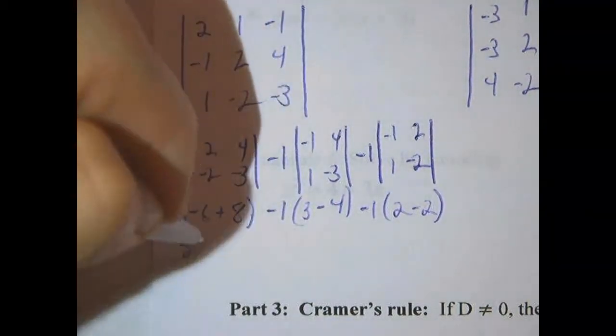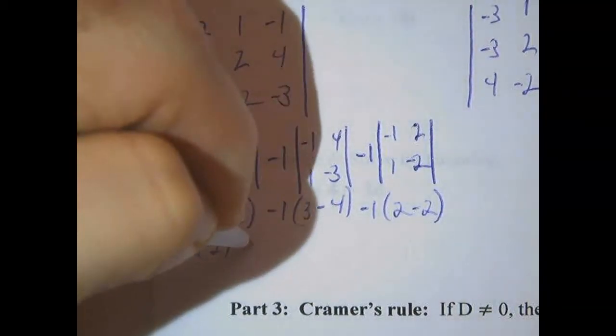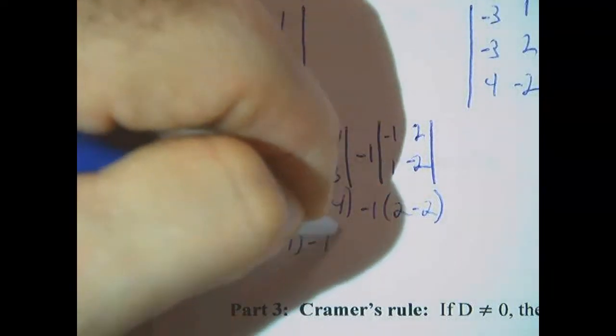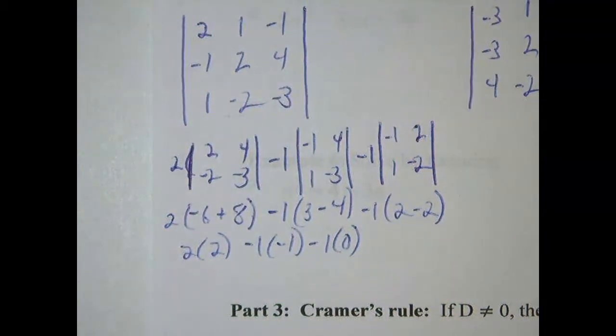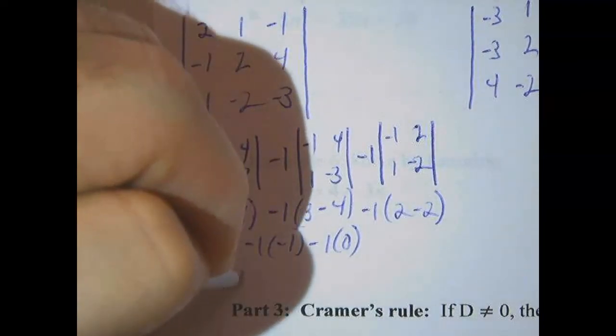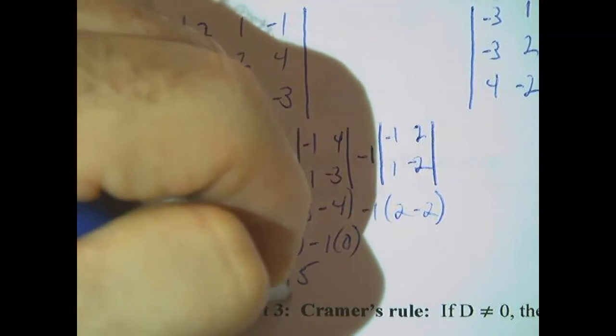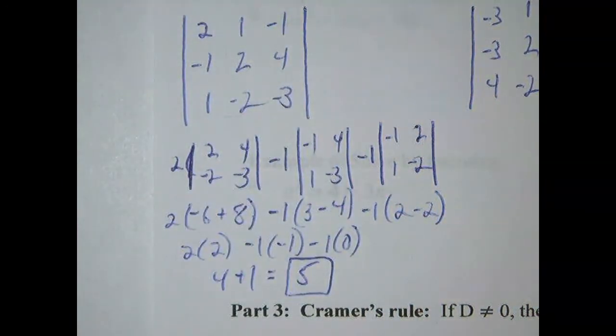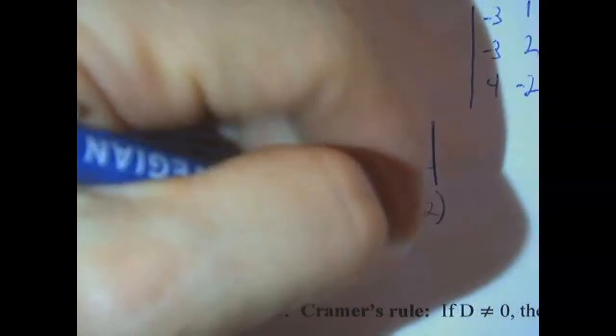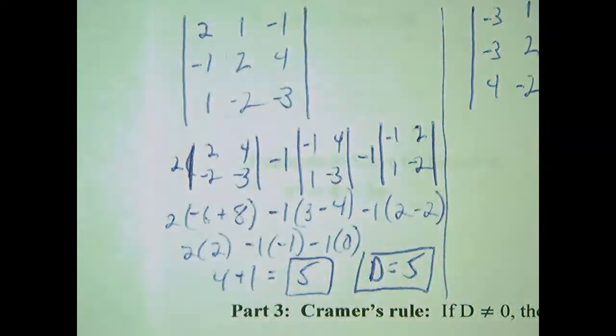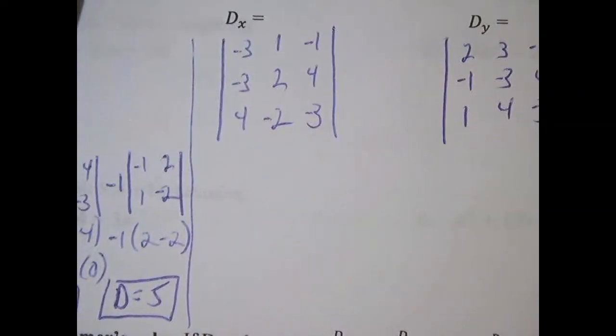So that gives us 2 times 2, minus 1 times negative 1, minus 1 times 0. And that gives us 4 plus 1 plus 0 minus 0 which is 5. So first 3 by 3 determinant there has a value of 5. So D equals 5.